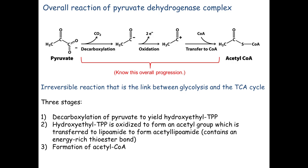So we've made acetyl-CoA. Keep in mind those three steps and where things are happening. We're starting in the cytoplasm to make pyruvate; it can easily cross the outer membrane because it's got holes in it. When it gets to the inner mitochondrial membrane, we do this reaction within the membrane, resulting in acetyl-CoA in the matrix. All we've done is prepare our molecule for the citric acid cycle — we haven't started the cycle yet.